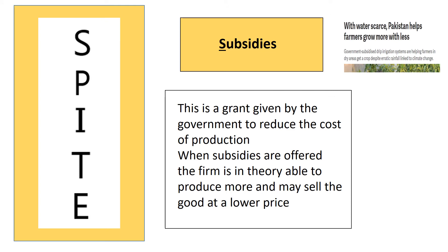Subsidies are a grant given by the government to reduce the cost of production. As you can see in the headline of the news article, the government in Pakistan are offering subsidies to farmers to enable them to lower their costs of production and increase the supply of their crops. When subsidies are offered, the firm is in theory able to produce more and may sell the good at a lower price, as subsidies make it easier and cheaper to supply the good. Government subsidies reduce the cost of production and increase supply at the given price, resulting in a shift in supply to the right.